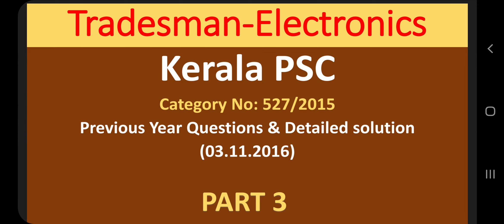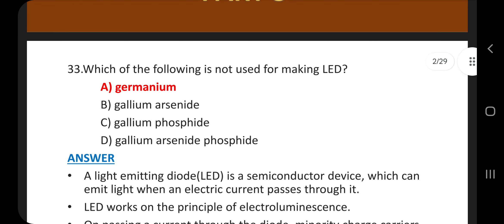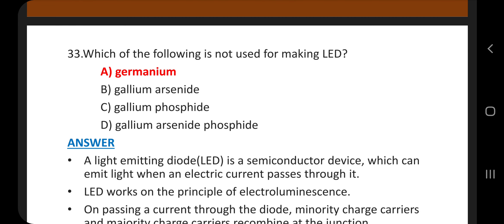This is the third part of Tradesman Electronics of Kerala PSE, category number 527 bar 2015. Previous year questions and detailed solutions, the exam conducted on 3-11-2016. Up to question number 32, we discussed in the last two parts.